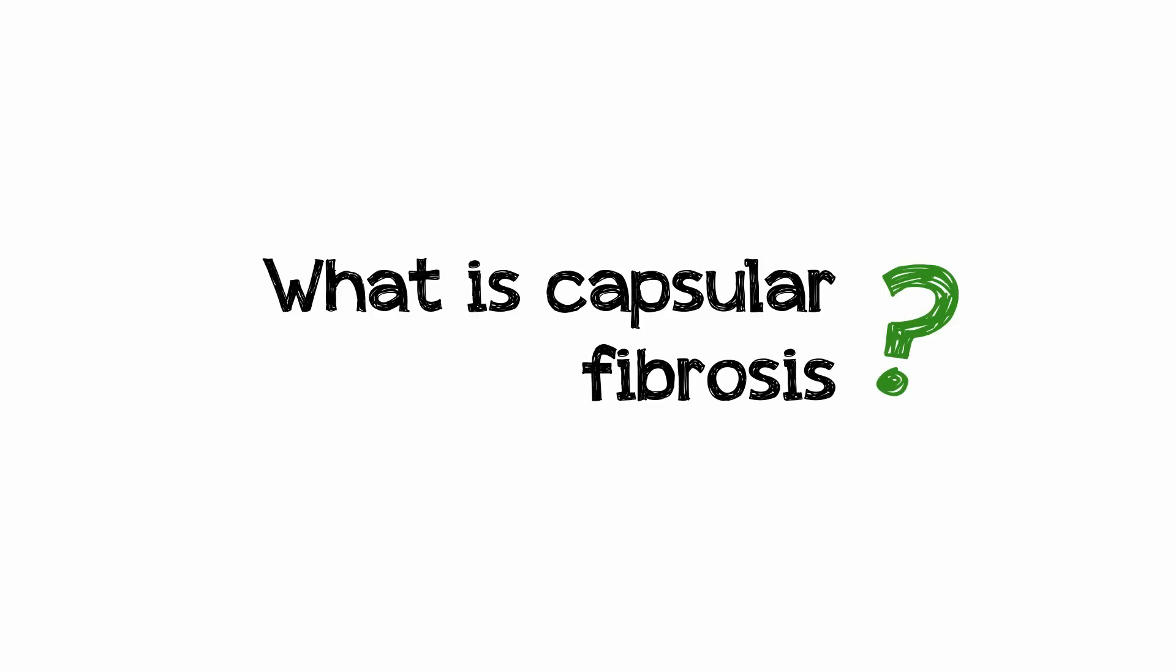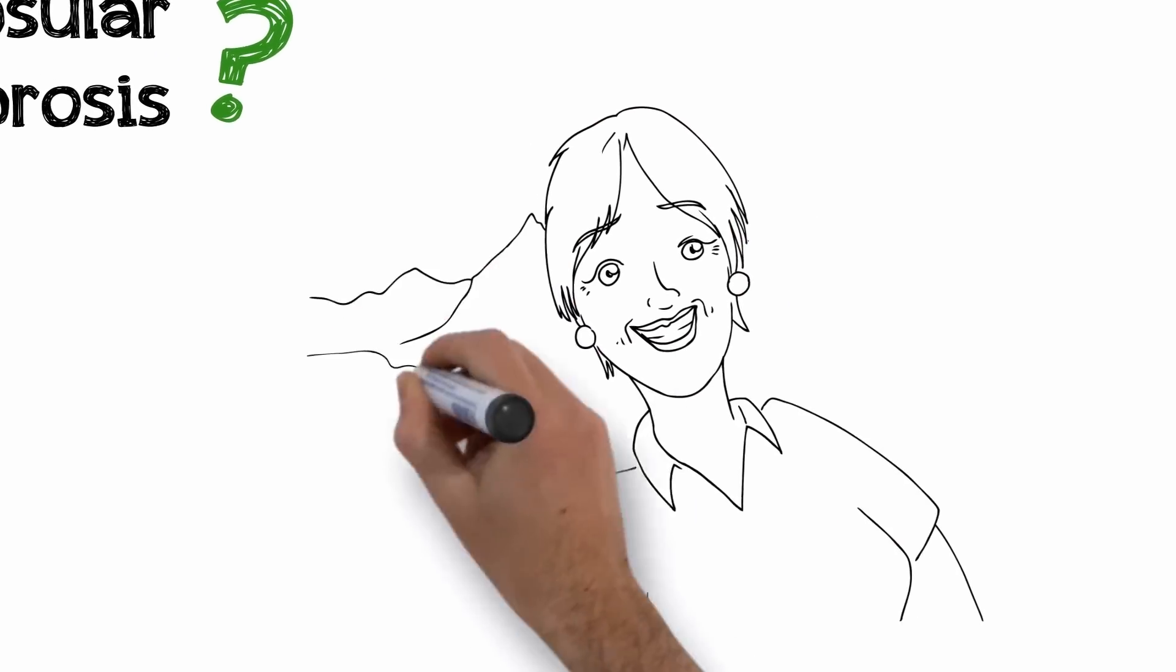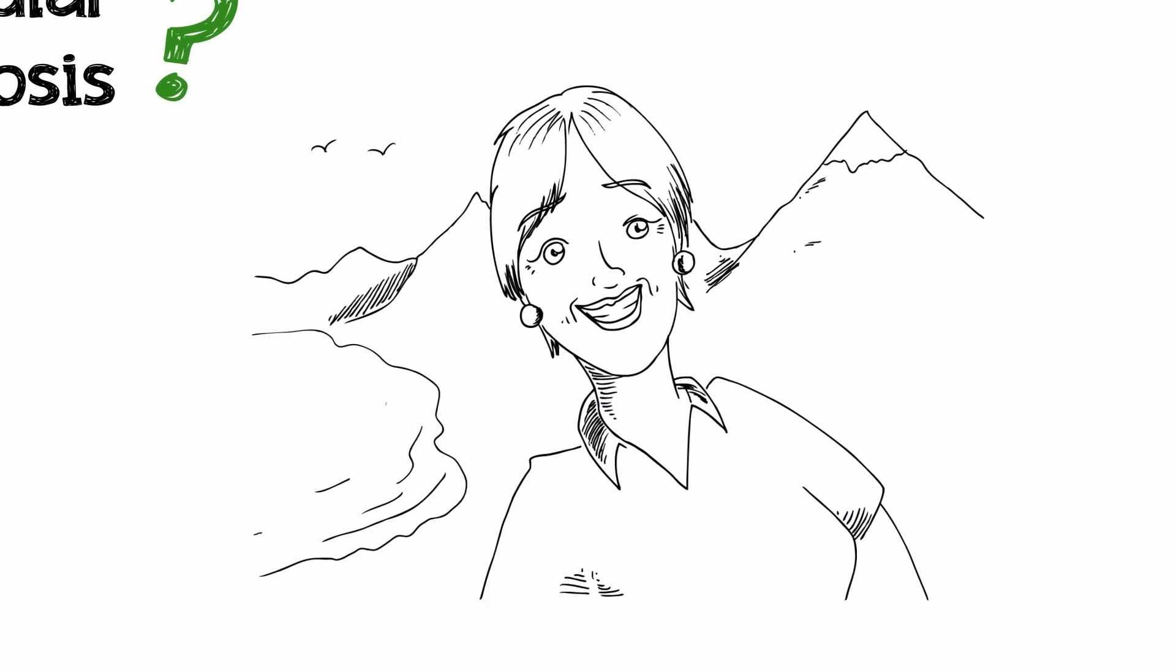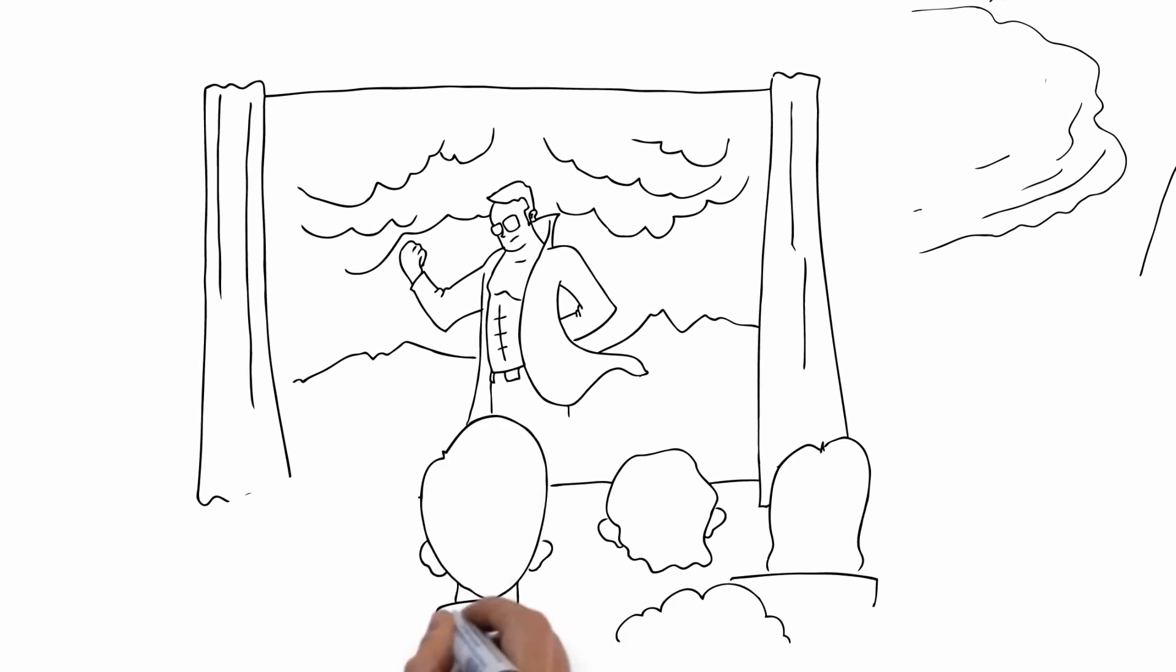What is capsular fibrosis? Not too long ago, you had cataract surgery and your sight was great. But now it seems like you have a film across your vision.